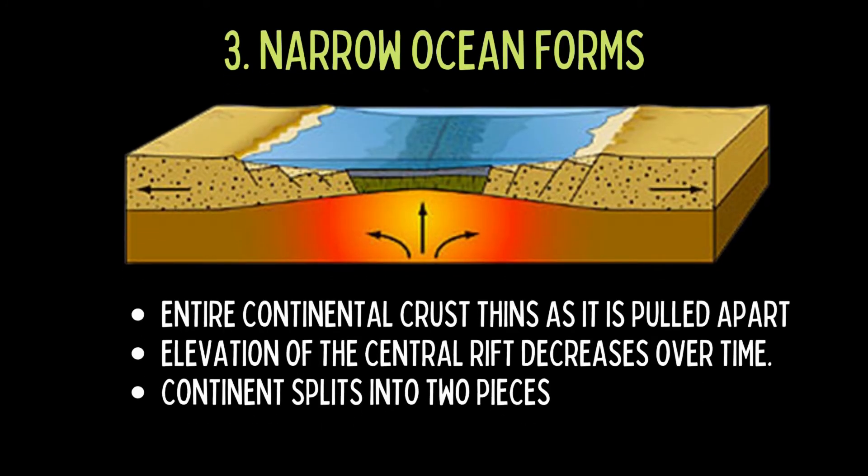The entire continental crust thins as it is pulled apart, and the elevation of that central rift decreases over time. If rifting continues, the continent splits into two pieces and a narrow ocean basin forms as seafloor spreading takes place. As the edges of the continents move further away from the heat associated with active spreading, the thinned continental crust cools and drops in elevation, eventually dropping below sea level.